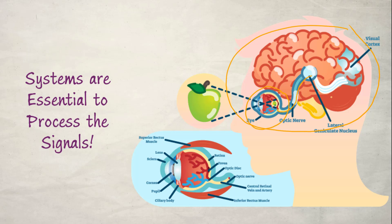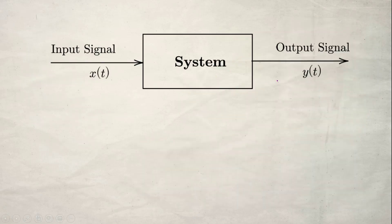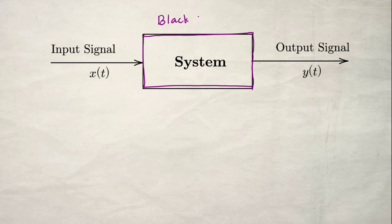Systems are essential to process signals. Signals have their own identity and can exist on their own, but whenever we need to process or change signals according to our requirements, we need a system. We can draw the block diagram of a signals and system like this — a block representing the system. This is known as the black box representation.